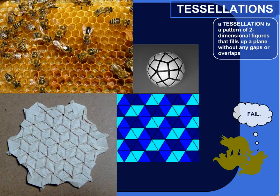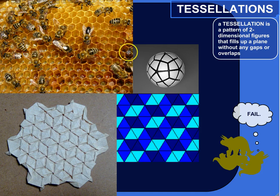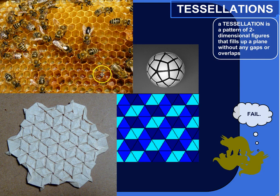Examples include hexagons — this is a regular tessellation where you use a regular polygon, like a hexagon, and it's just one shape, just hexagons.